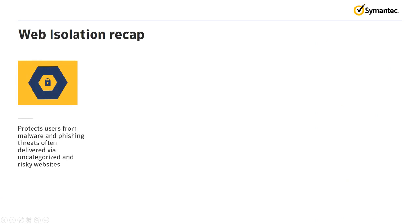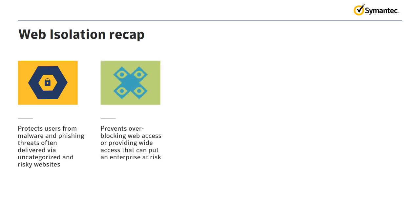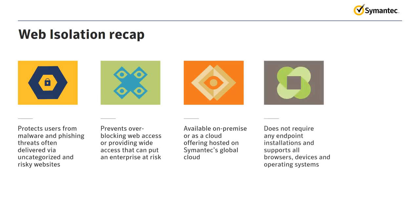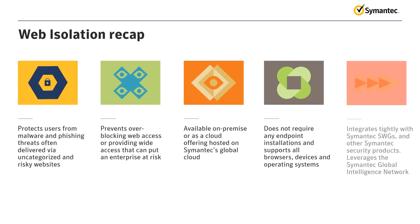As we have demonstrated, Web Isolation protects users from malware and phishing threats often delivered via uncategorized and risky websites. It eliminates the need for IT security teams to choose between over-blocking web access or providing wide access that can put an enterprise at risk. Semantic Web Isolation is available on-premise or as a cloud offering hosted on Semantic's global cloud. Web Isolation does not require any endpoint installations and supports all browsers, devices, and operating systems. It also integrates tightly with Semantic Secure Web Gateways and other Semantic products and leverages the Semantic Global Intelligence Network to identify and assess risky websites.